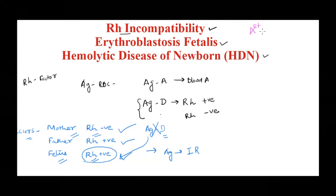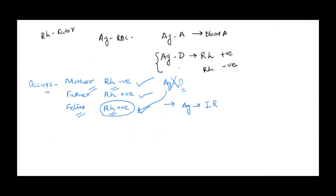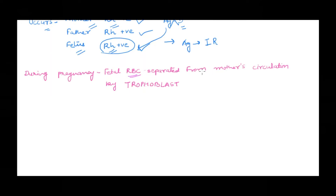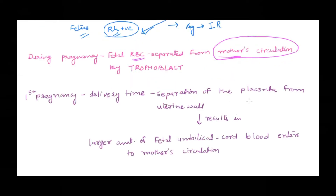It will happen in subsequent deliveries. The reason is that during pregnancy, the fetal RBCs are separated from the mother's circulation — fetal blood does not enter the mother's circulation during pregnancy. So the mother's immune system is not exposed to the RH antigen. But during delivery, when the placenta is separated, there will be a leakage of fetal blood cells into the mother's circulation.